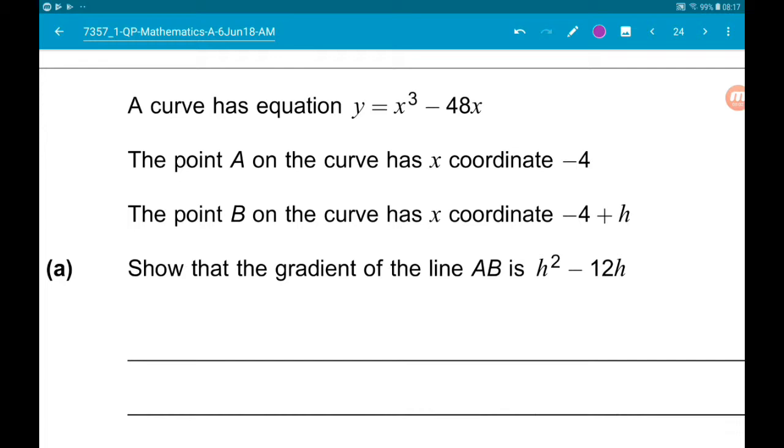Okay, question 15, final question. A curve has equation y equals x cubed minus 48x. The point A on the curve has x coordinate minus 4. The point B on the curve has x coordinate minus 4 add h. We want to show that the gradient of the line AB is h squared minus 12h.